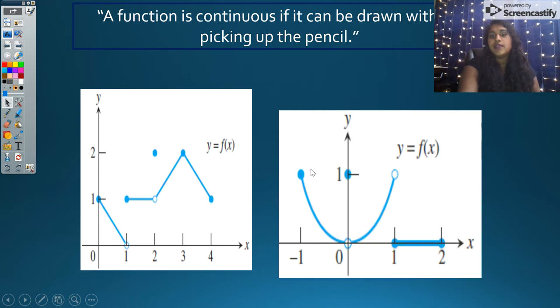This function right here, from negative 1 to 0, continuous? Absolutely. But from negative 1 to positive 2, discontinuous. I had to pick up my pencil at 0. I had to pick up my pencil at 1. And to draw that coordinate point, I had to pick up my pencil.